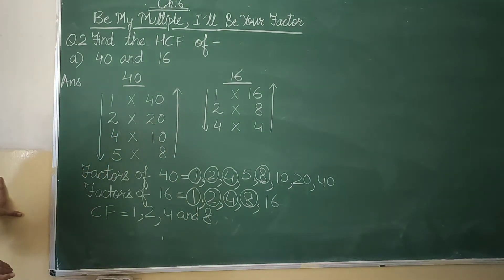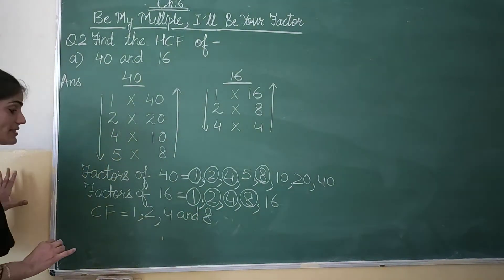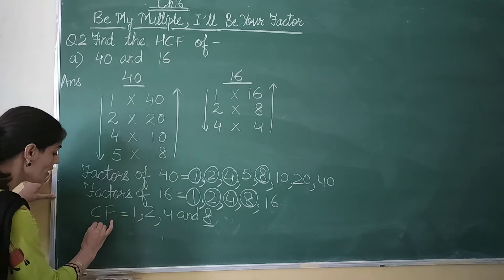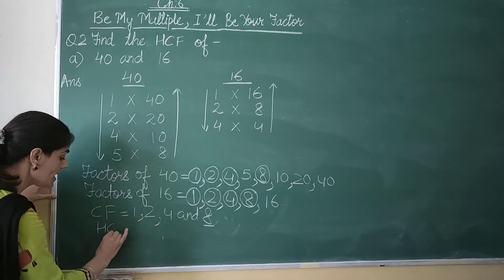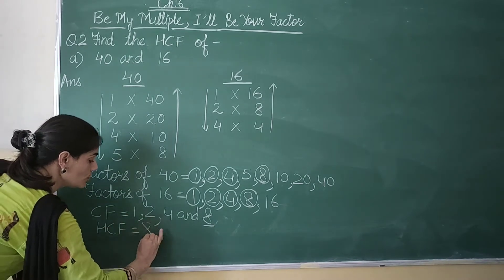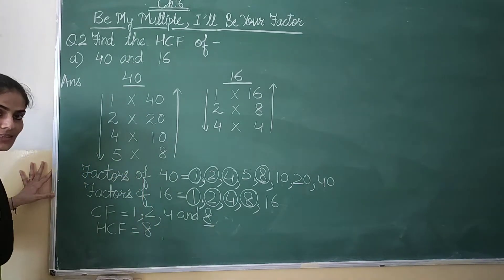The highest among the common factors 1, 2, 4, and 8 is 8. So the HCF of 40 and 16 is equal to 8.